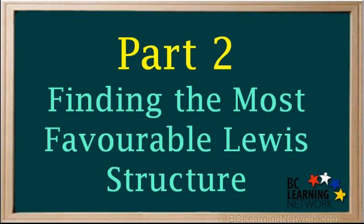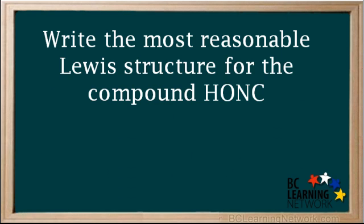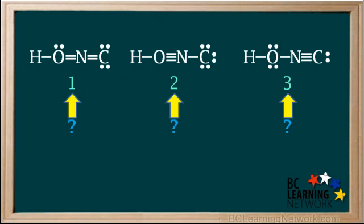In part 2 of this video, we'll show you how to select the most favorable Lewis structure if you're given more than one possible structure. Remember, the task is to find the most reasonable Lewis structure for the compound HONC. In part 1, we came up with these three possible structures to choose from.